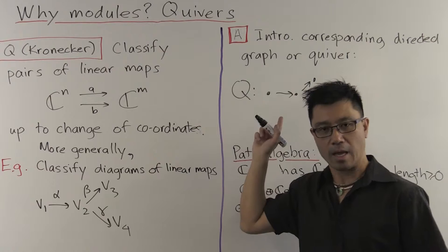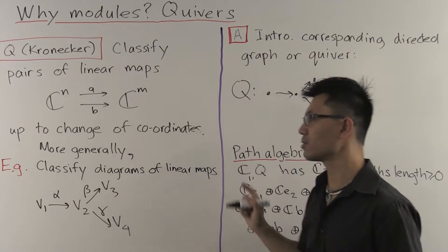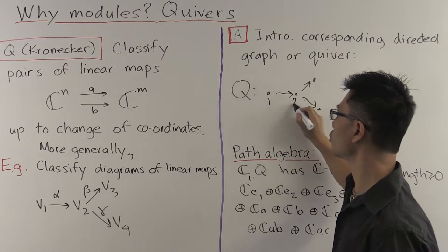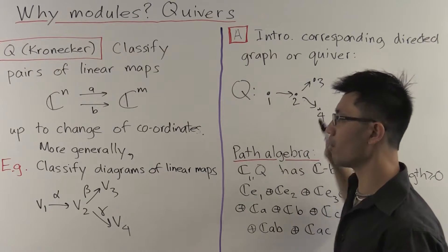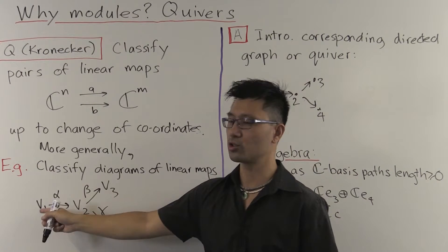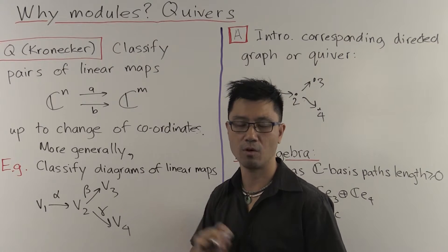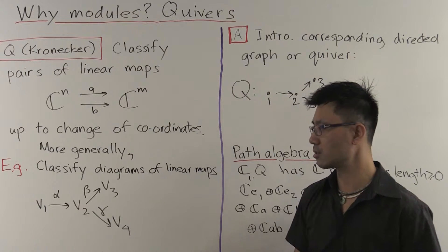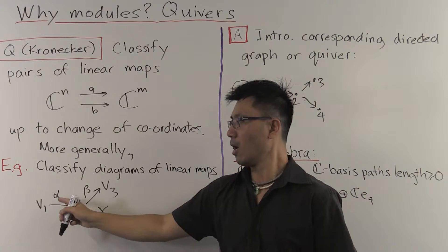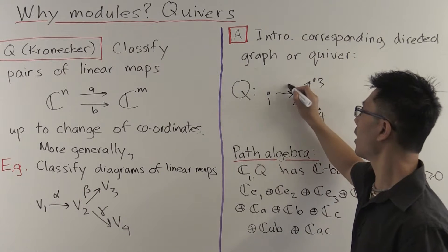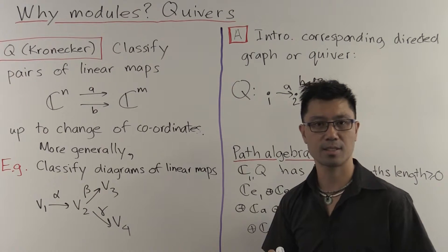So there are four vertices, and each of these linear maps with a directed edge. Let's give these edges and vertices labels. Let's label the vertices 1, 2, 3, 4, corresponding to V1, V2, V3, and V4. And the edges may be A, B, and C.